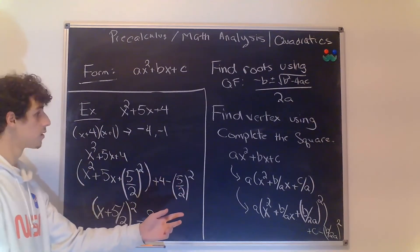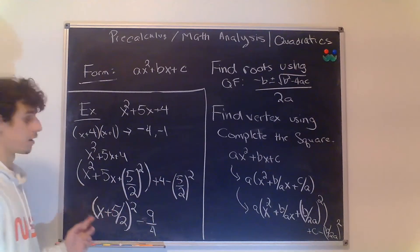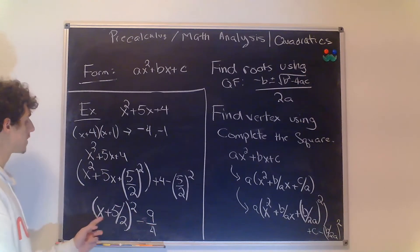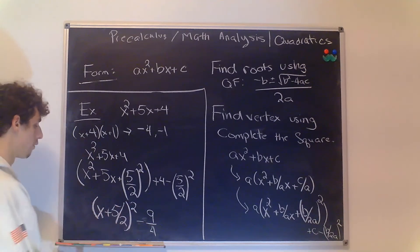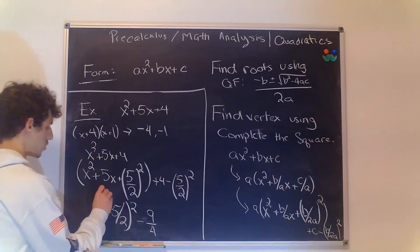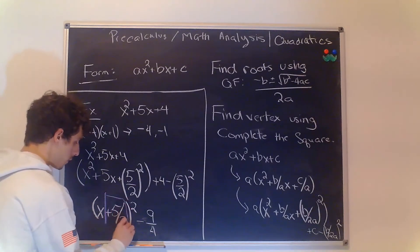But we found our vertex because our vertex is where this function is the smallest and this function is the smallest when x is equal to negative whatever this number is that I am squaring in purple.